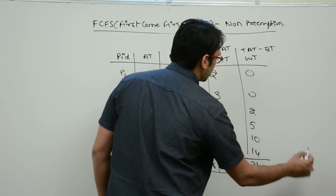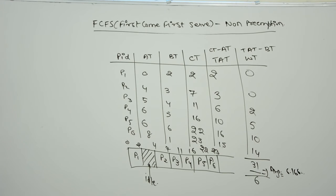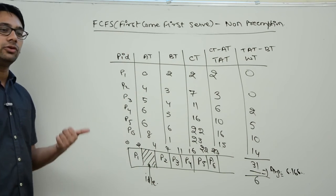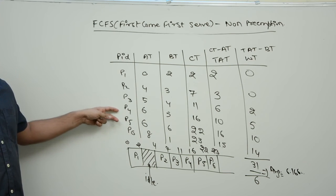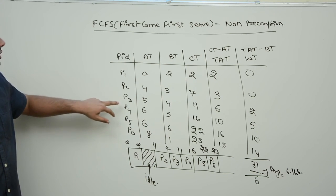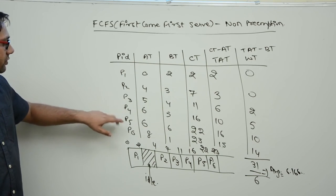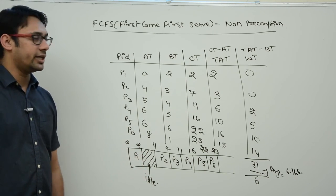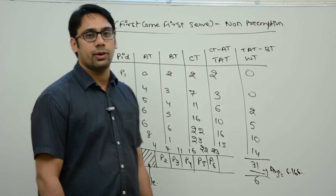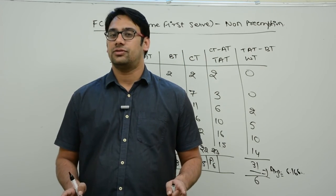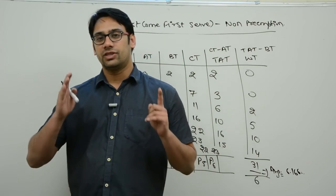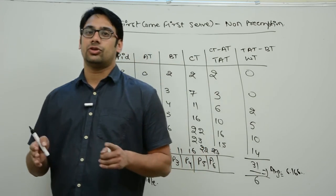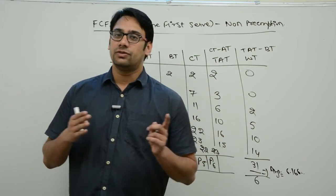Our aim is to minimize the average waiting time. This example illustrated two key concepts: first, if two processes have the same arrival time, we schedule according to process ID; second, if no process is available, the CPU remains idle. In the next video, we will look at the problem with the first-come-first-serve scheduling algorithm.